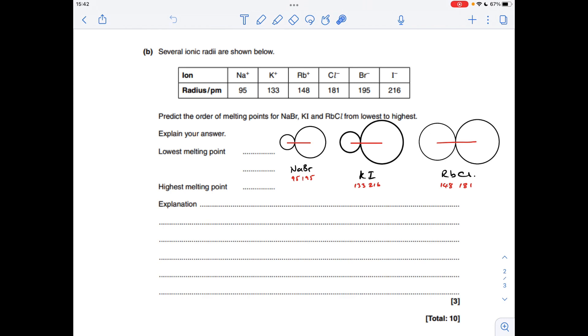So in sodium bromide, you've got 95 as the ionic radius for the sodium ion, so there to there. Bromide is 195 there to there. So the combined radius for that one is 290.